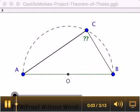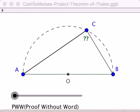Thales' theorem states that if A, B, and C are points on a circle where the line AB is the diameter of the circle, then the angle ACB is a right angle.